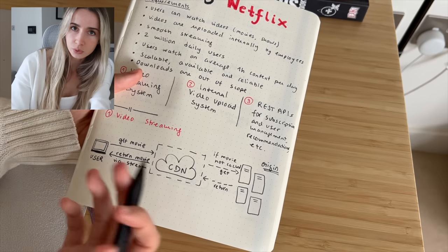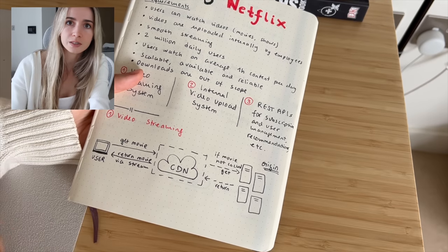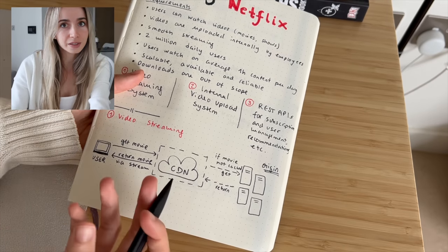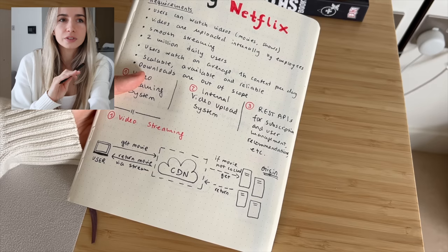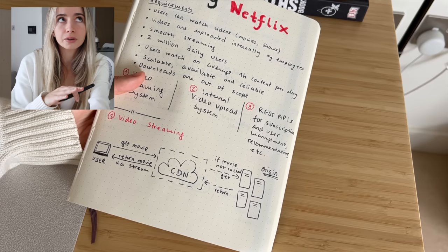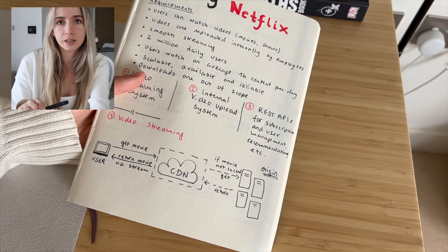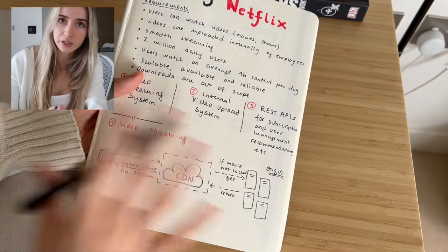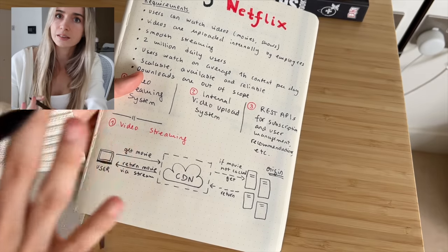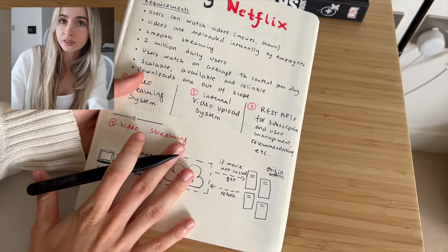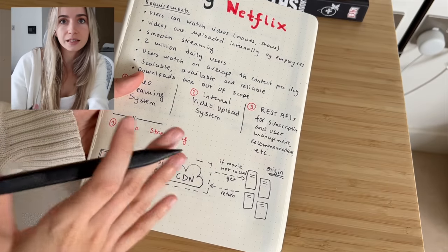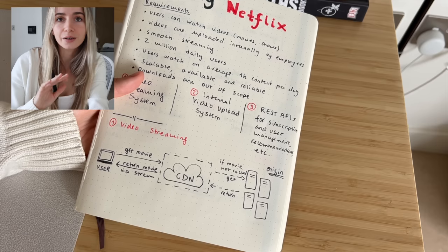If we were to actually do this, we would obviously use a third-party CDN — we wouldn't create our own. In CDNs, you usually pay per the amount of data that is sent through the CDN. So this is pretty straightforward: we use a CDN, that is how we cache the content, that is how we reduce the latency, and that is how we stream it to the user.